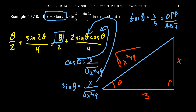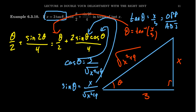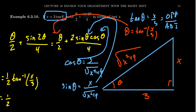Now, what do we do about theta itself? We go back to x equals 3 tangent theta, which gives tangent theta equals x over 3. Taking arctangent on both sides, theta equals arctangent of x over 3. So we substitute that in for theta, and our expression becomes one half arctangent of x over 3, plus one half times sine — which is x over the square root of x squared plus 9 — times cosine.